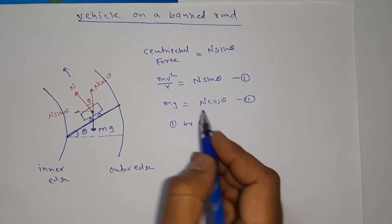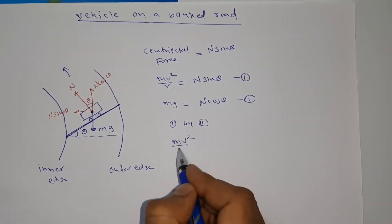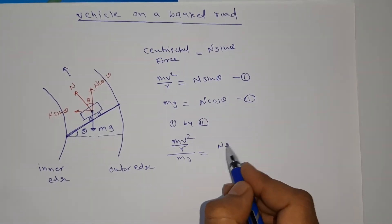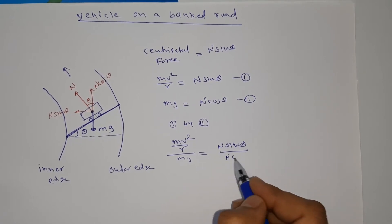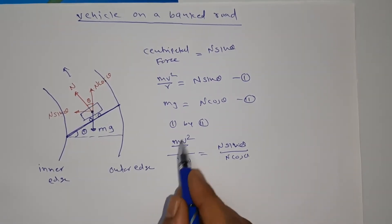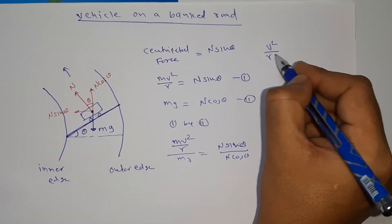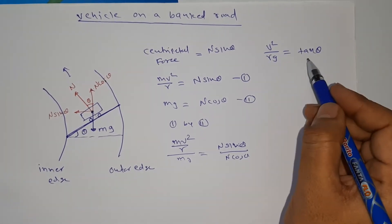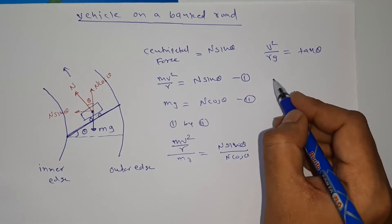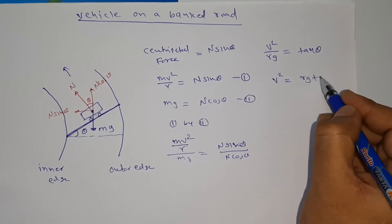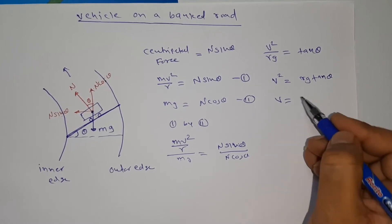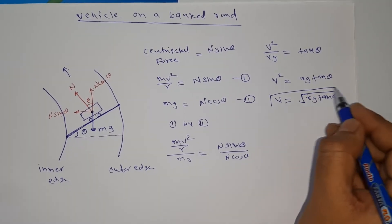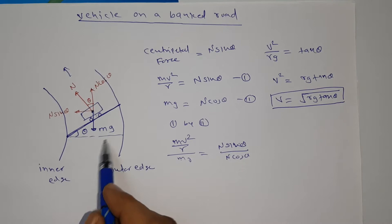Dividing equation one by equation two: v²/(rg) = N sinθ / N cosθ. The N's cancel and sinθ/cosθ = tanθ. So tanθ = v²/(rg), which gives v² = rg tanθ, or v = √(rg tanθ). This is the maximum safe speed of a vehicle on a banked road.